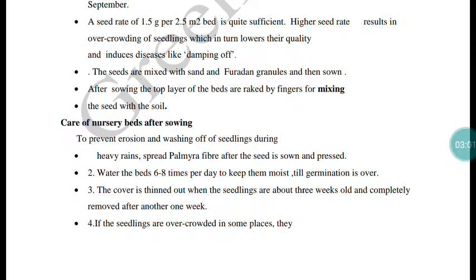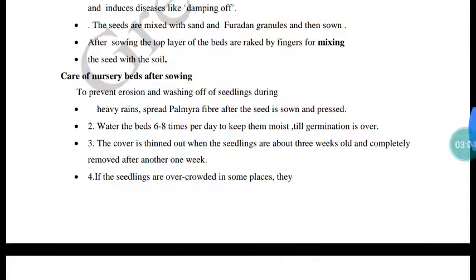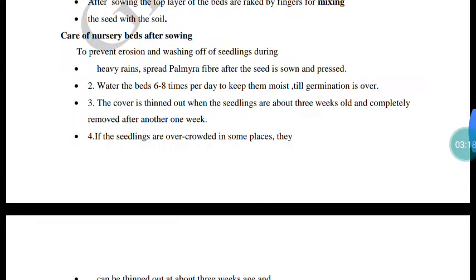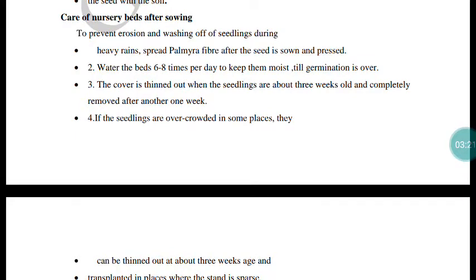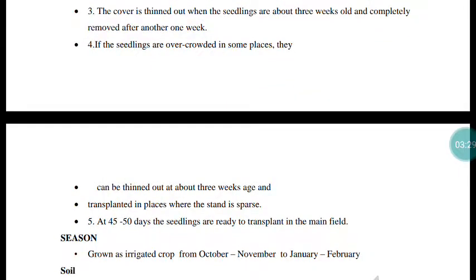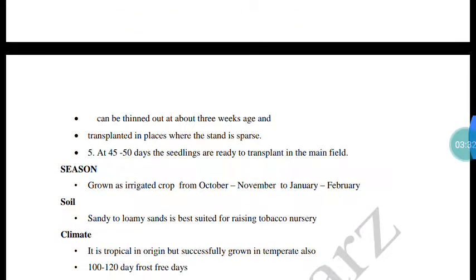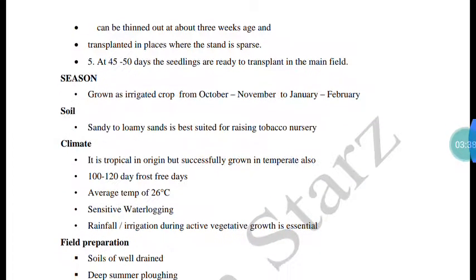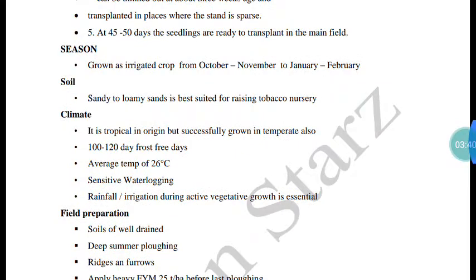In the nursery, disease management and proper population maintenance are important. Shade material is used to cover the nursery bed, and continuous water sprinkling ensures germination. About 6-8 times pricking/thinning is very important to maintain proper seedling thickness. The nursery period is 45 to 50 days.